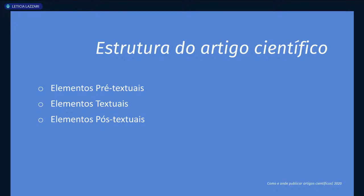A estrutura do artigo científico é dividida em três partes: os elementos pré-textuais, os elementos textuais e os elementos pós-textuais. Para quem já está familiarizado com a estrutura de trabalho científico que a ABNT também define, vocês já estarão acostumados com esses três elementos — eles são bem parecidos, mas com algumas diferenças.